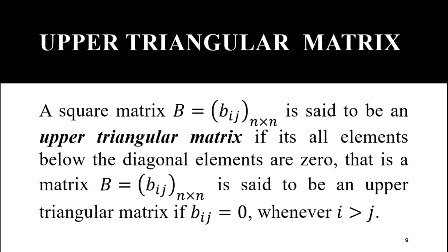Upper triangular matrix: a square matrix B equal to b_ij with n rows and columns is said to be an upper triangular matrix if all elements below the diagonal elements are 0. That is, b_ij equals 0 whenever the row suffix i is greater than the column suffix j. For example, elements b_21, b_32, b_43, b_54 — all elements where the row suffix is greater than the column suffix — should be 0, as these are the elements below the diagonal.